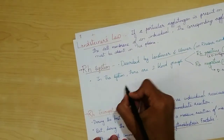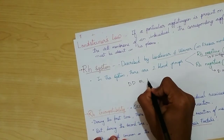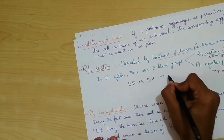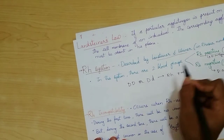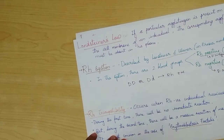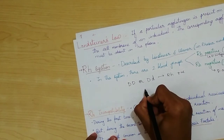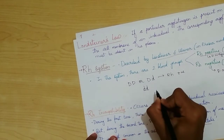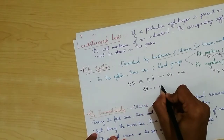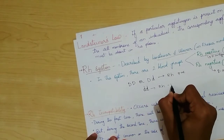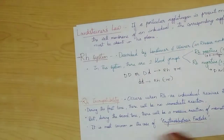The RH factor is an autosomal dominant trait. When the genotype is DD or Dd, the individual will be RH positive. It will only be RH negative if the genotype is dd (homozygous recessive).